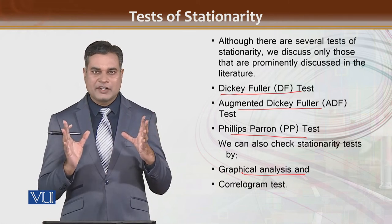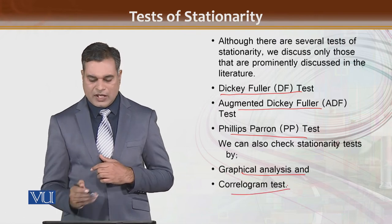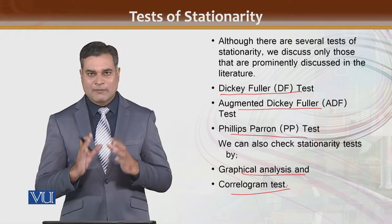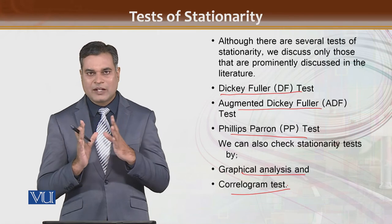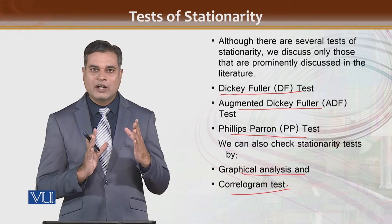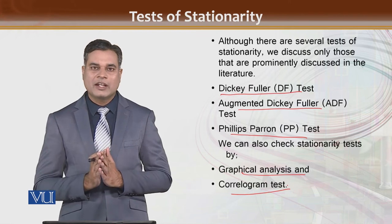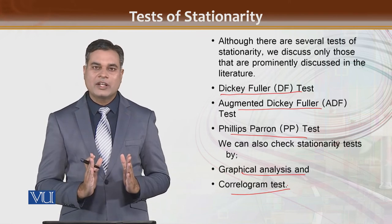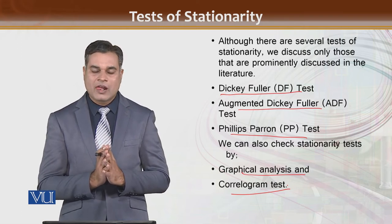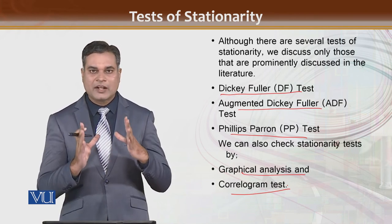On the other hand, we can also check informally by graphical analysis — we draw the graph and from the graph we get an idea whether the series is stationary or not. Then we have the correlogram: we check whether the values of ACF (autocorrelation function) and PACF (partial autocorrelation function) are coming within the significant limits. If yes, the series is stationary; if not, it is non-stationary.